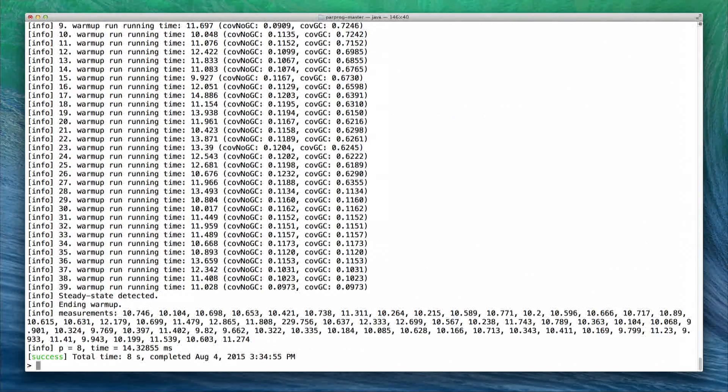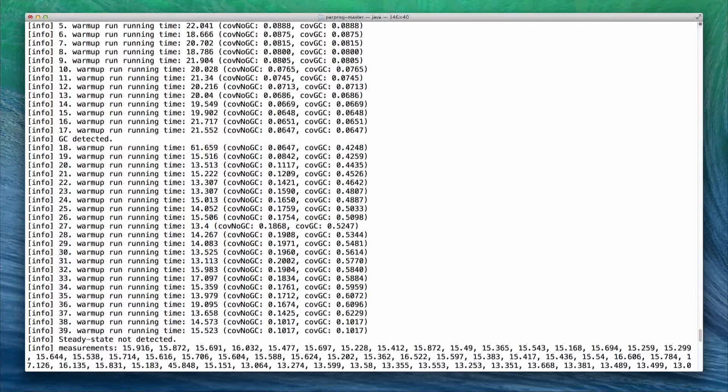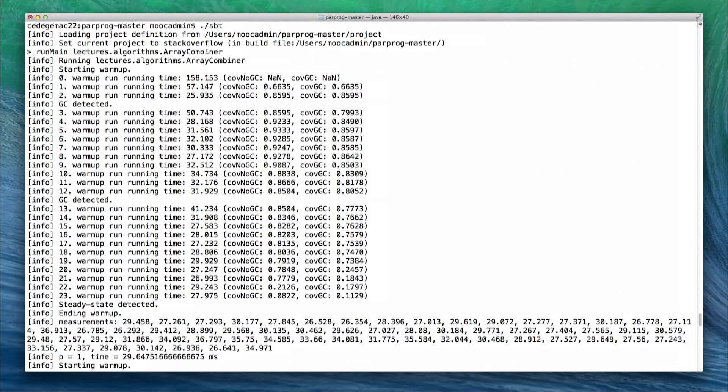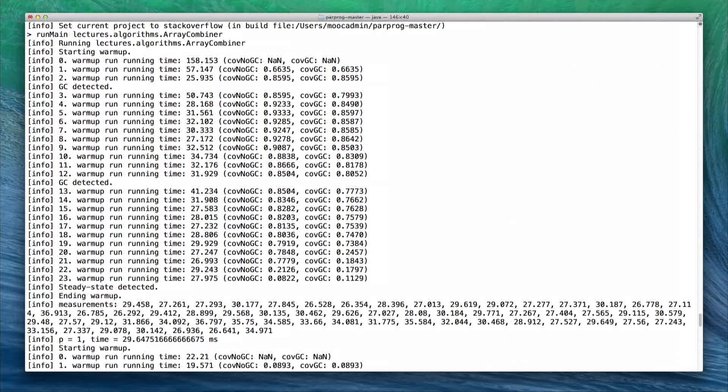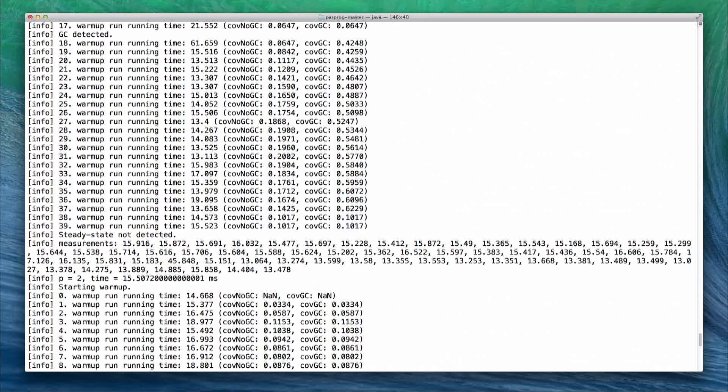Let's examine the output. Scalameter starts by executing 20 warm-up runs. Once the steady state is detected, scalameter reports the average running time. For one processor, this takes 30 milliseconds. For two processors, the speedup is approximately linear. The time it takes is 15 milliseconds.